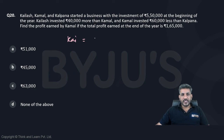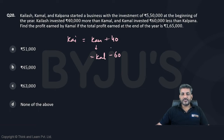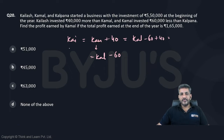Kailash equals Kamal plus 40,000, and Kamal equals Kalpana minus 60,000. If I put Kalpana minus 60 in place of Kamal here, I will get Kalpana minus 60 plus 40, that is Kalpana minus 20, which equals Kailash.